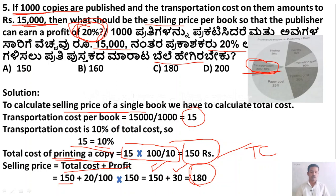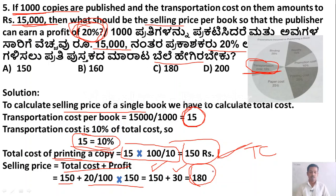To summarize: transportation cost per book is Rs. 15, which is 10% of total cost. Total cost = 15 × 100/10 = Rs. 150. Profit is 20%, so 20/100 × 150 = Rs. 30. Therefore, 150 + 30 = Rs. 180 is the selling price.